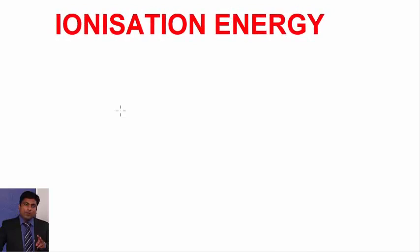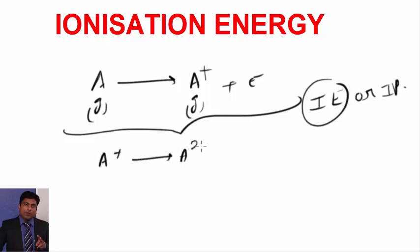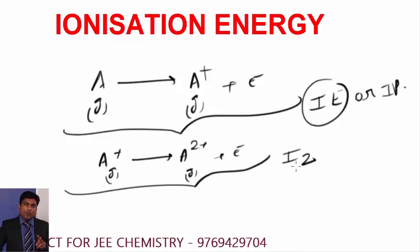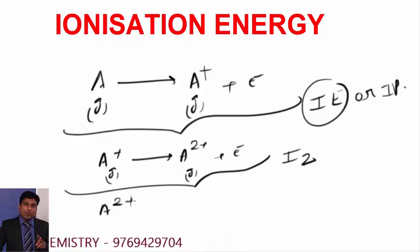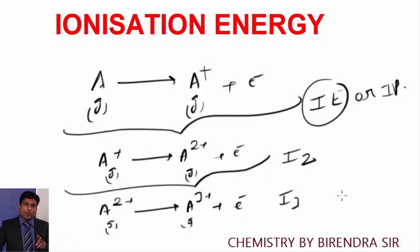Guys, first of all, what is ionization energy? It is the energy required to remove an electron from an isolated gaseous atom. For example, if a gaseous atom A is given and you convert A into A+, the energy required is ionization energy — also called ionization potential. When A+ is converted into A++, the energy required is the second ionization energy. When A2+ is converted into A3+, the energy required is the third ionization energy. I1, I2, I3 are successive ionization energies.